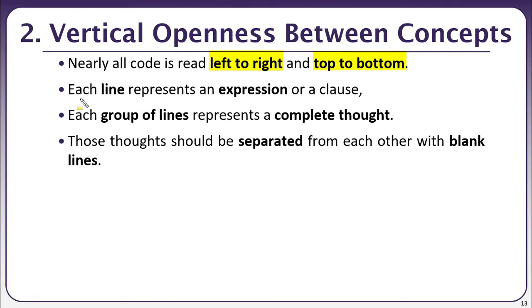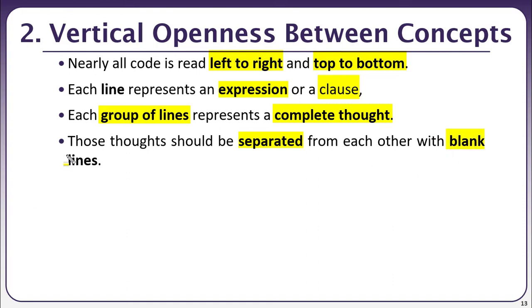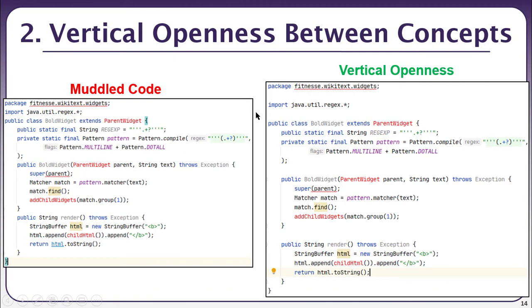Because code is written in English, which we read left to right and top to bottom, each line should represent an expression or a particular clause of the code. When grouping lines, each group must represent a complete thought, and those thoughts should be separated from each other with a blank line. For example, a group of variable declarations followed by a group of constructors should be separated by a blank line. Both good and bad examples of vertical openness between concepts are presented.